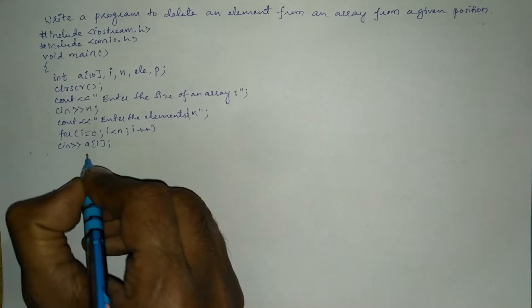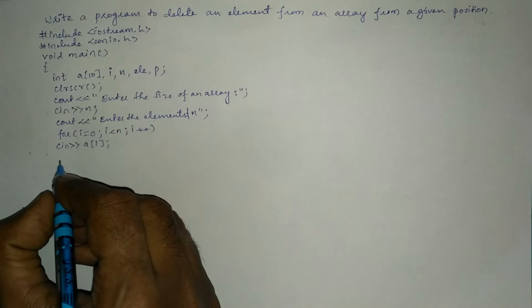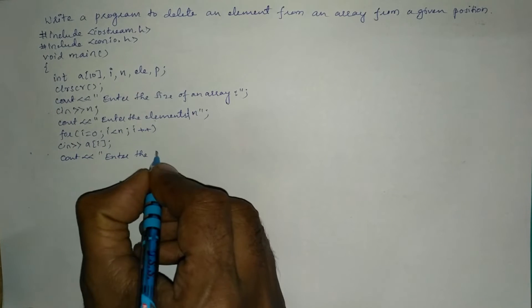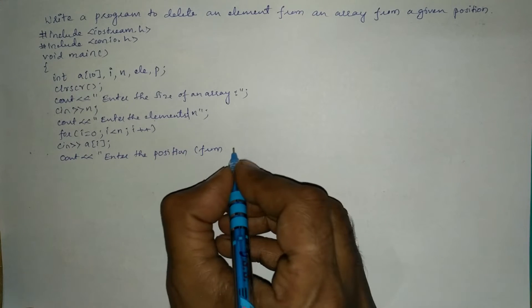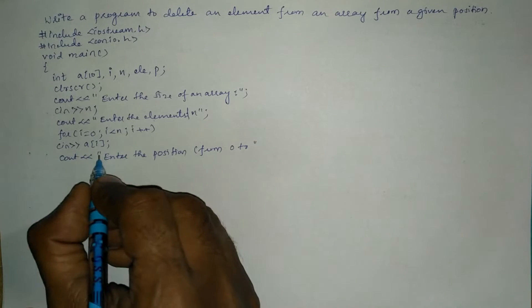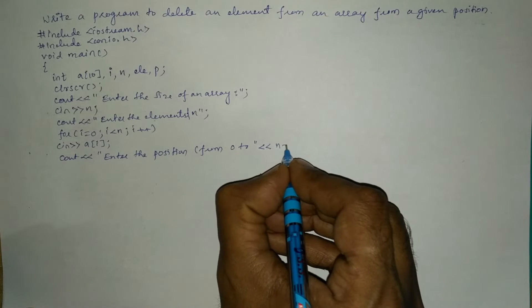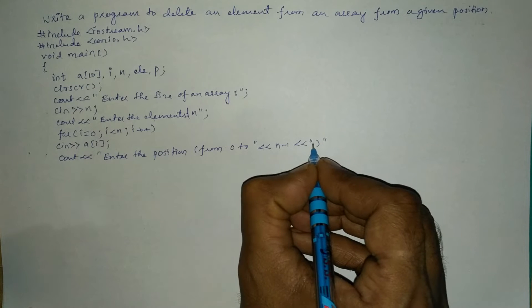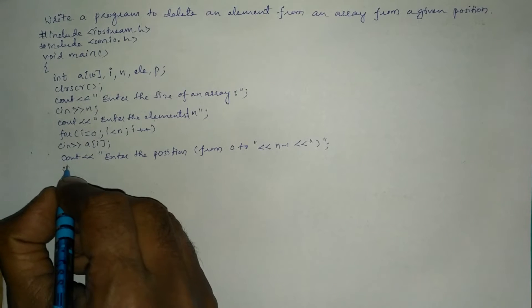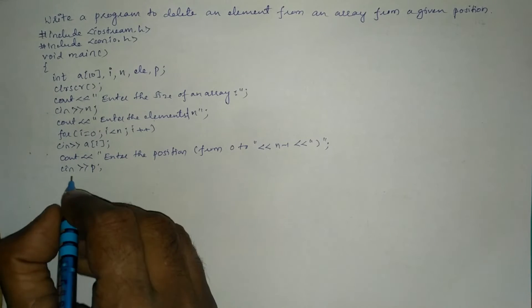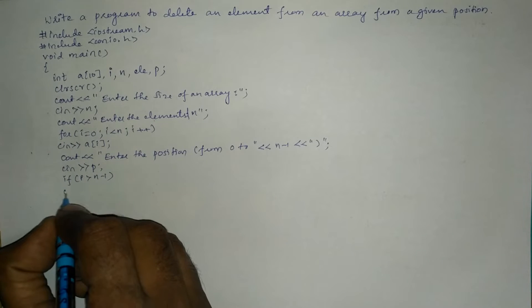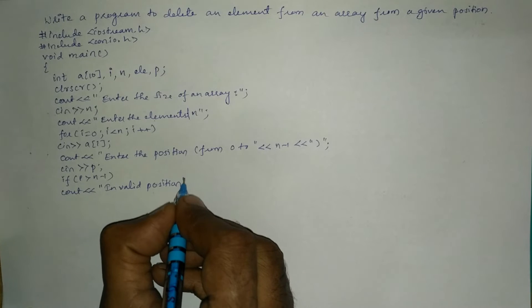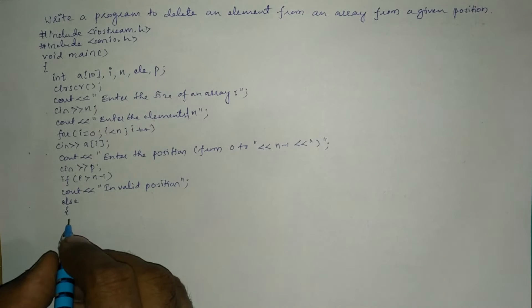Using a for loop — i = 0; i < n; i++ — we read cin >> a[i]. Next we ask the user to enter the position using cout, printing 'Enter the position from 0 to (n-1)'. Then cin >> p reads the position. We check: if p is greater than n-1, we print an error message 'invalid position'; otherwise the else part gets executed.